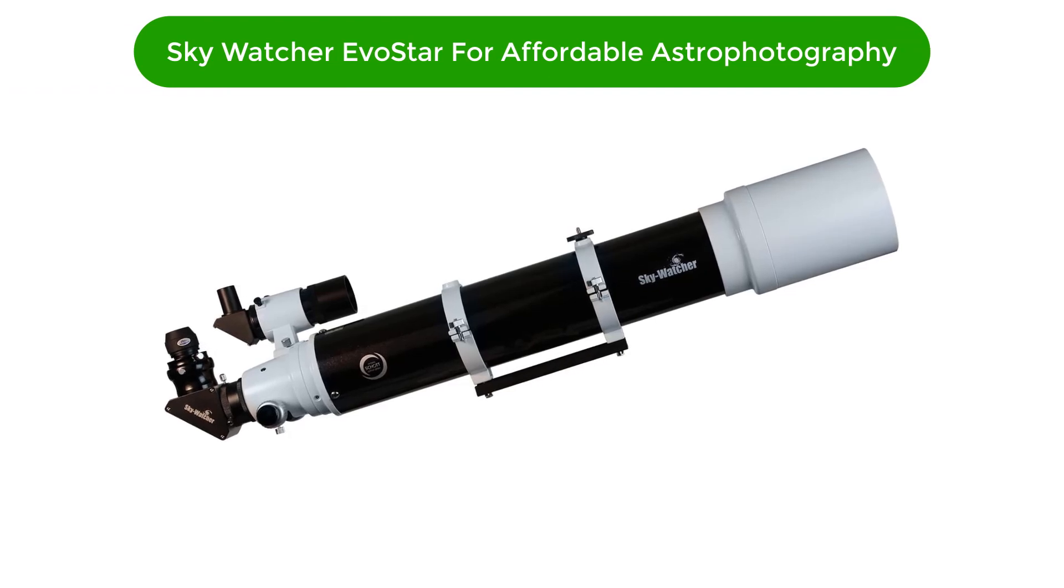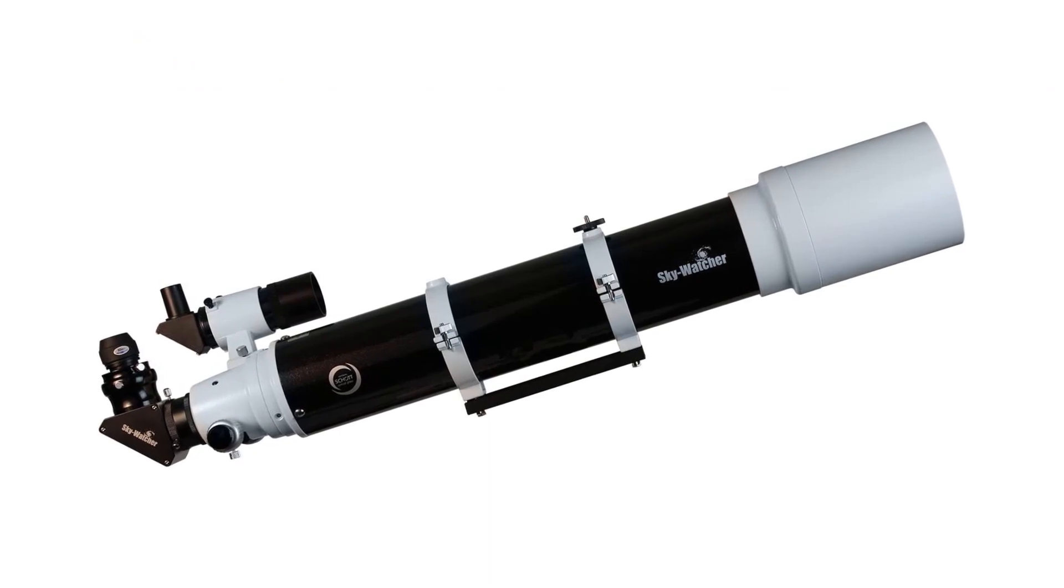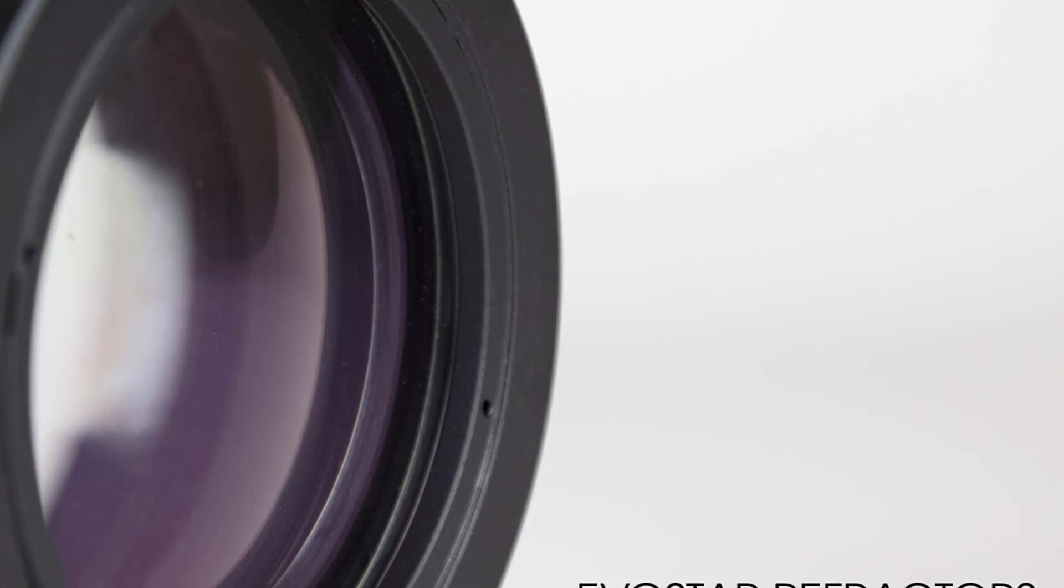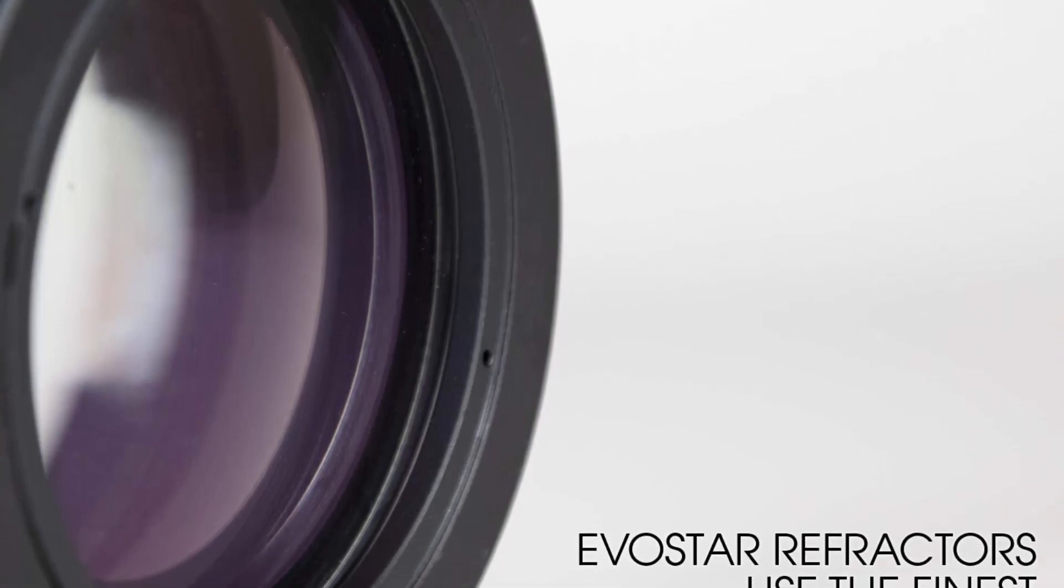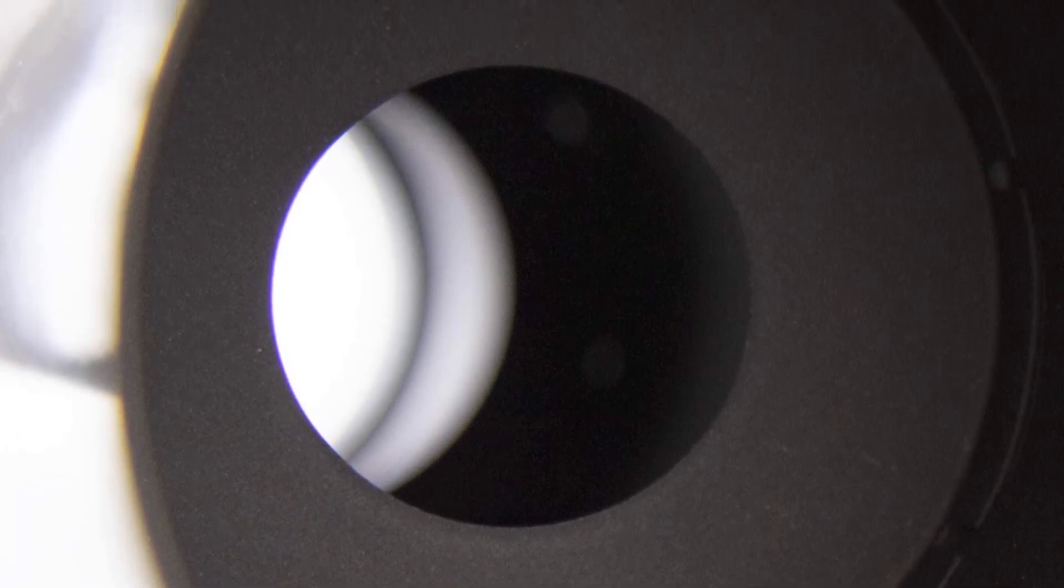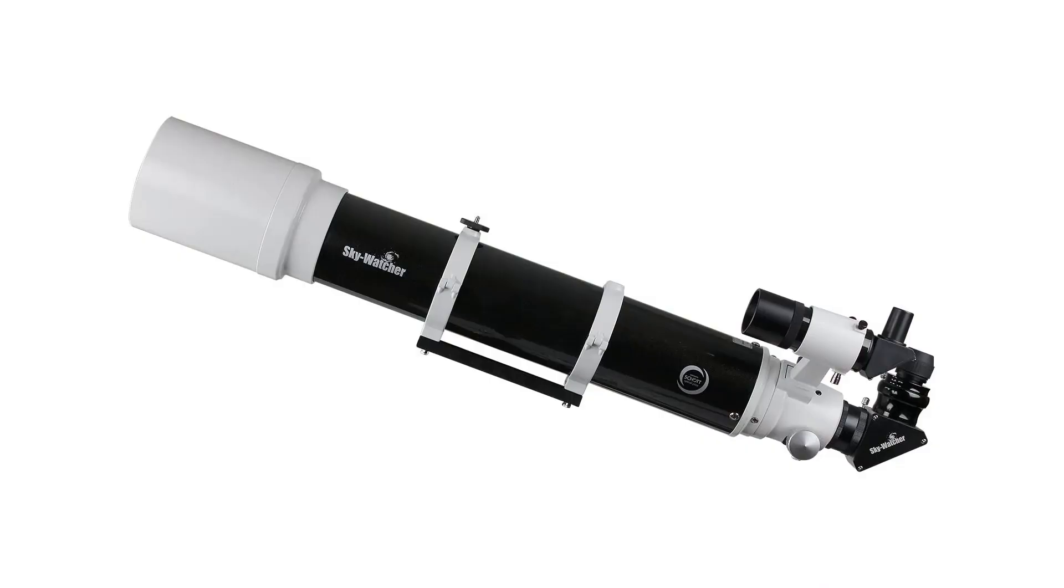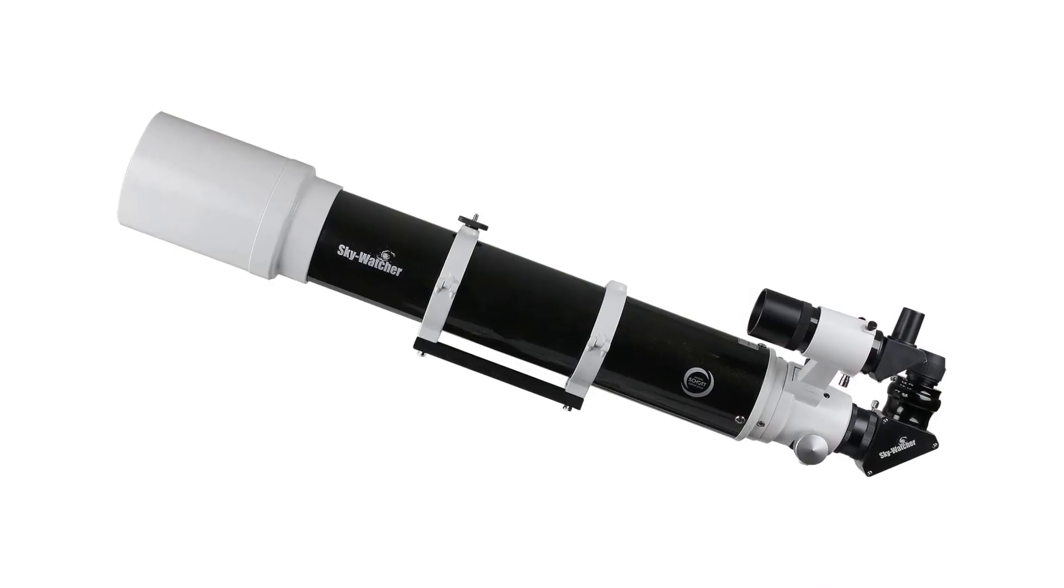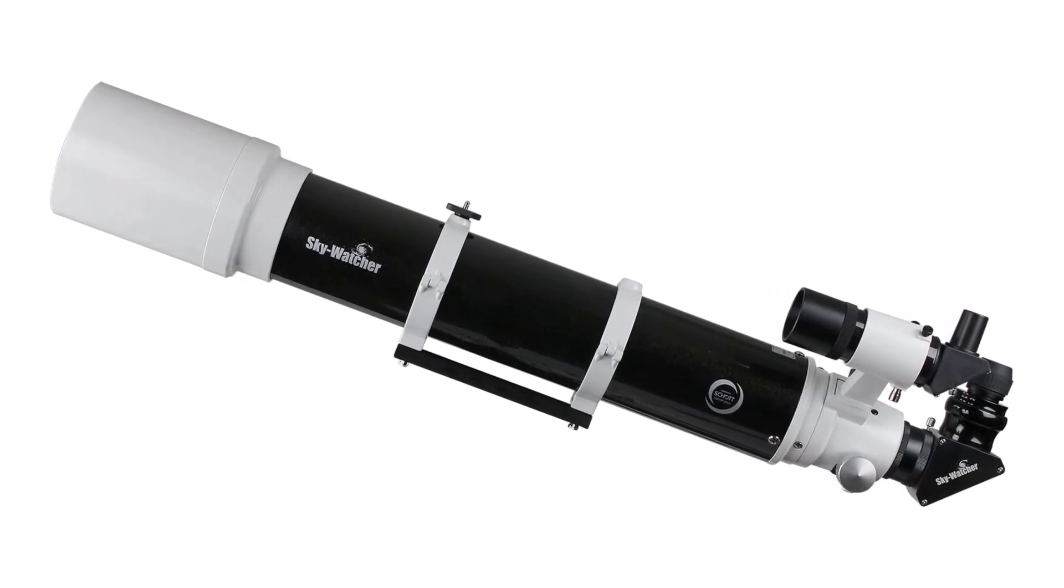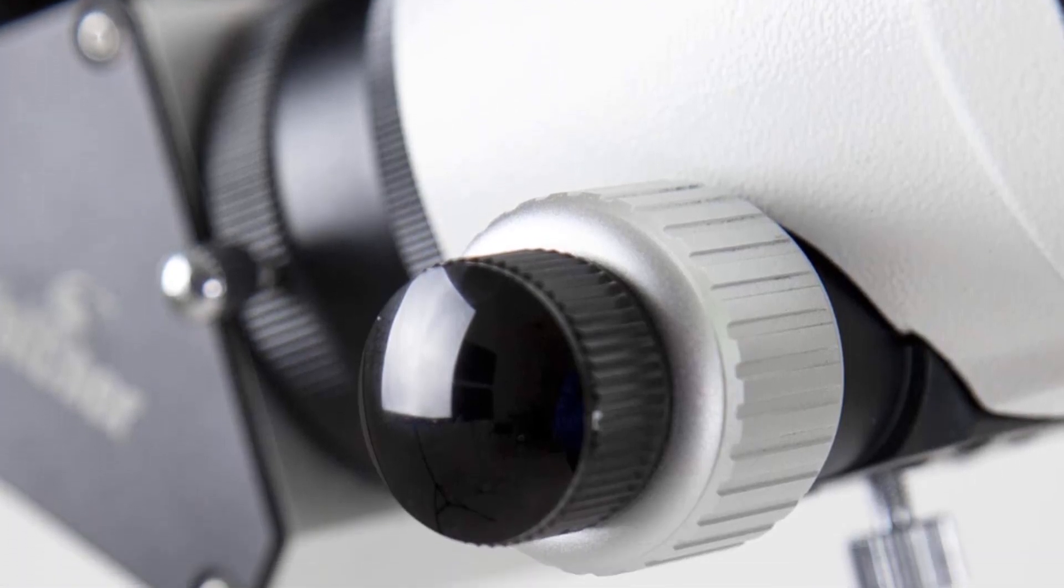Our fifth best pick is SkyWatcher Evostar for affordable astrophotography. Whether you're a beginner or looking for your new favorite model, it can be considered the best all-around telescope for astrophotography. As a refractor telescope with a 120mm aperture, you are able to capture a pretty clear picture of the planets and celestial objects that you're aiming for. The telescope has an ED shot glass with a 900mm focal length, f-slash 7.5, which makes it pretty high up there regarding focal length, an important feature when considering how clear the picture should be.